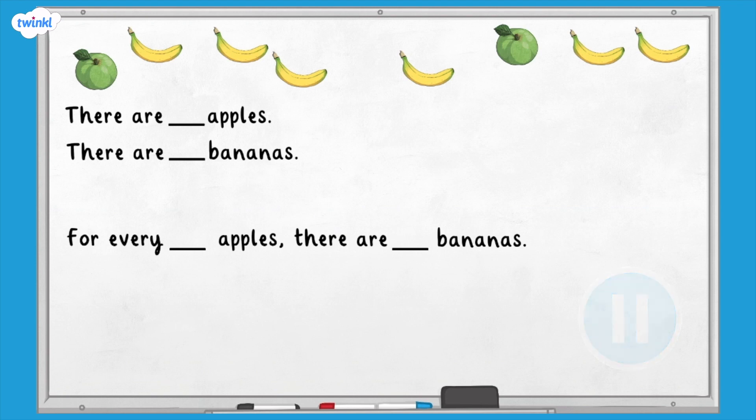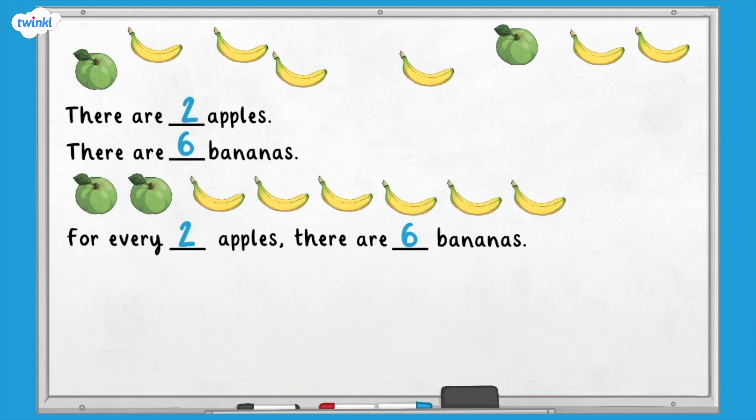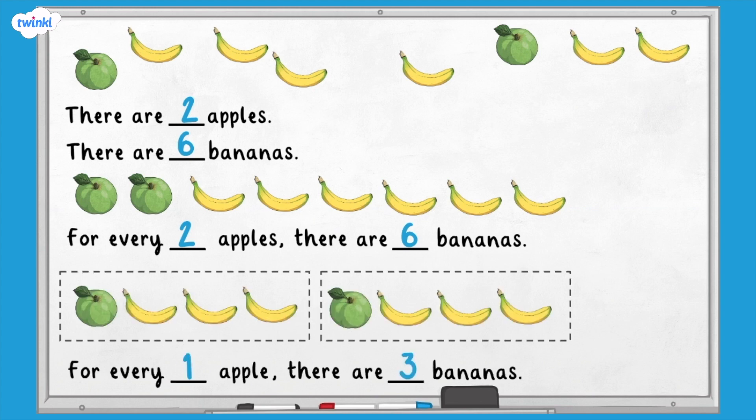Let's check your answers. There are two apples, there are six bananas. For every two apples, there are six bananas. You could also say, for every one apple, there are three bananas.